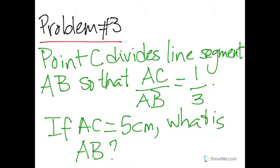Now on to the third problem. Point C divides line segment AB so that AC over AB equals 1 over 3. If AC equals 5 centimeters, what is AB?